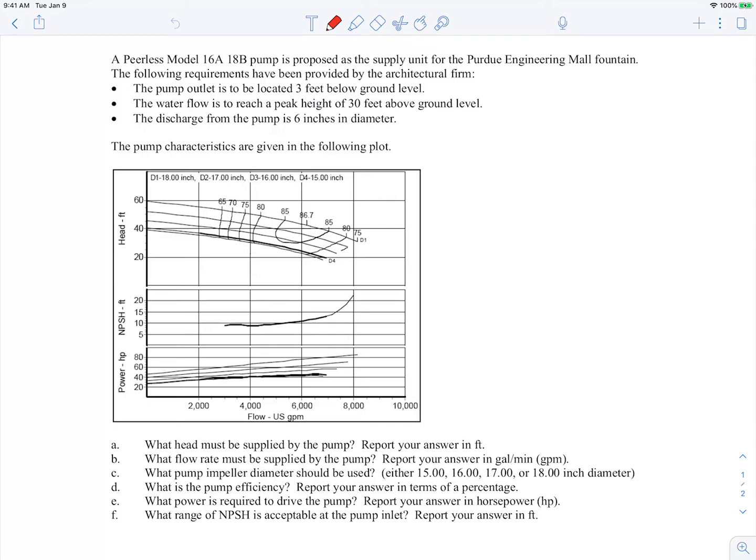In this example, we're told we have a Peerless model 16A18B pump, and it's proposed that this pump is going to be the supply unit for the Purdue Engineering Mall Fountain. So the fountain we have right out in front of the ME building, this is the pump that we're proposing to use to create that fountain.